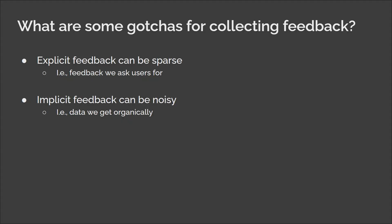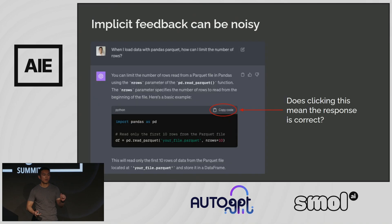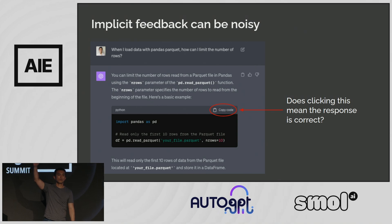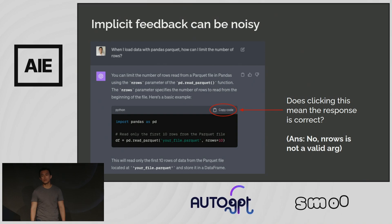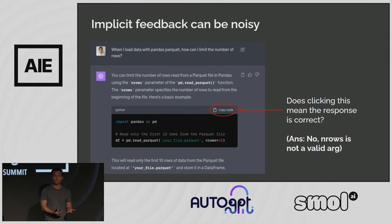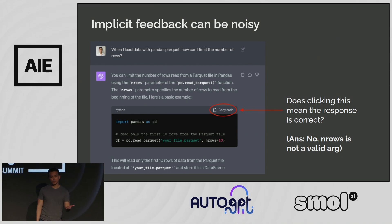If the issue with explicit feedback is sparsity, then the issue with implicit feedback is noise. Implicit feedback is the feedback you get as users organically use your product — you don't have to ask for it. For example: how often do you click the copy code button in ChatGPT? But does clicking copy code mean the code is correct? In this case, no — 'end rows' is not a valid argument for Pandas read_csv. But if we consider all copied code snippets as positive feedback, we would have a lot of bad data in our training.